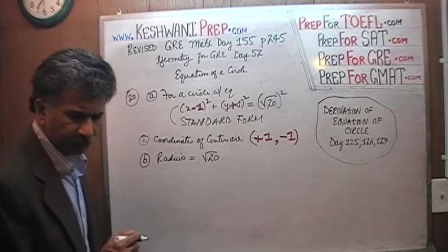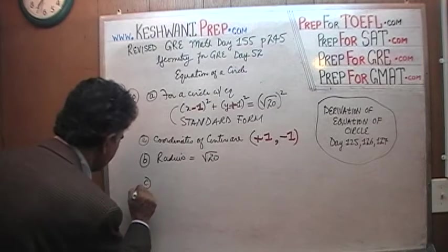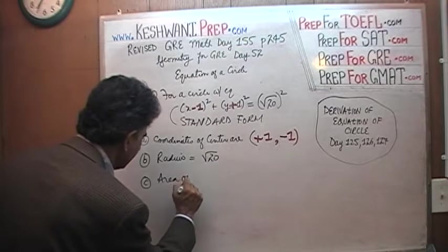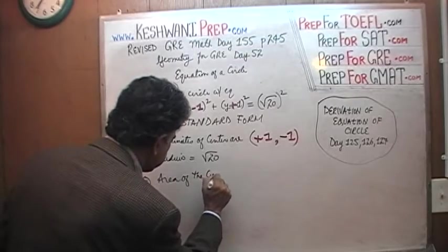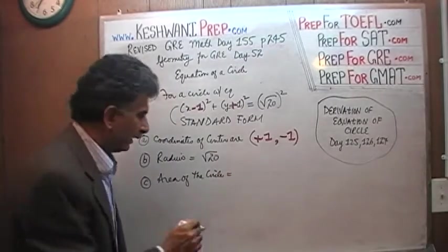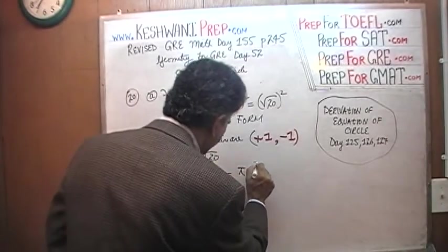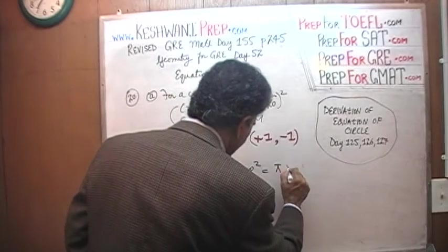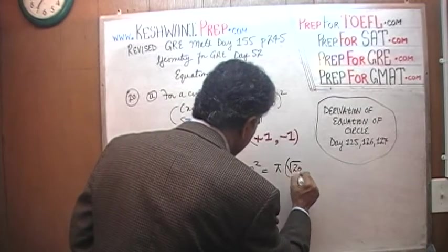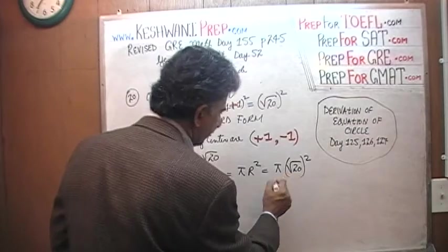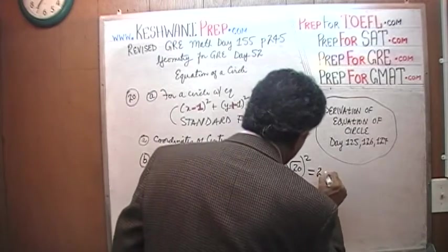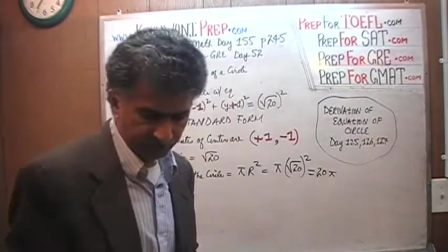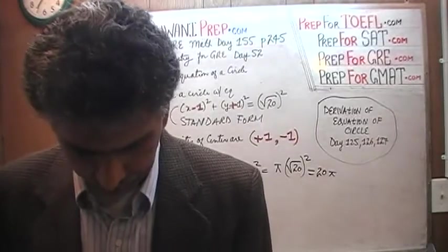The last thing that they ask you is the area of the circle. Area of the circle, as we all know, is π r², π times r, which we know is square root of 20 squared, which is 20. So it is just 20π. That is all. That was the end of it.